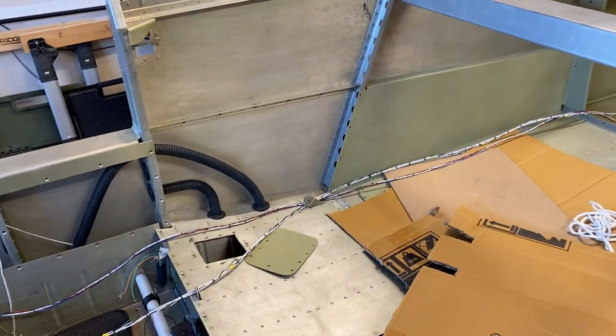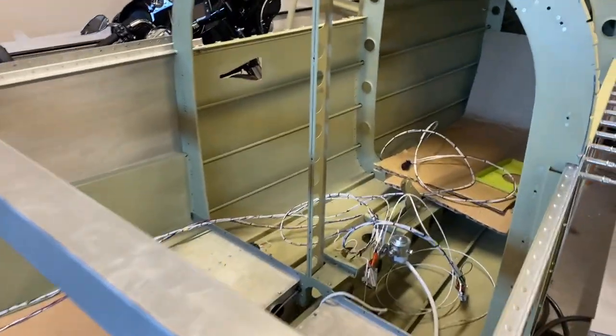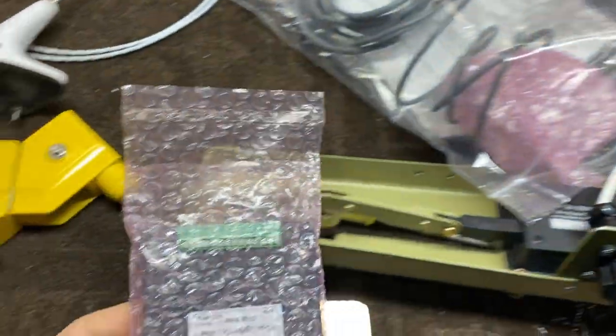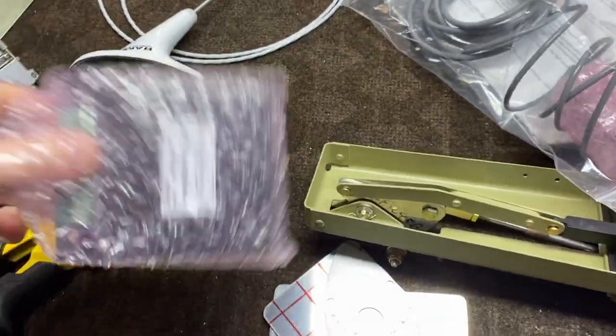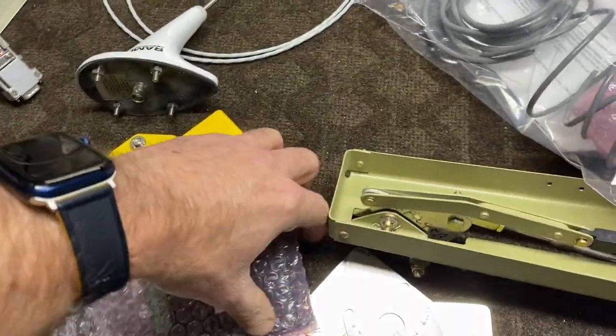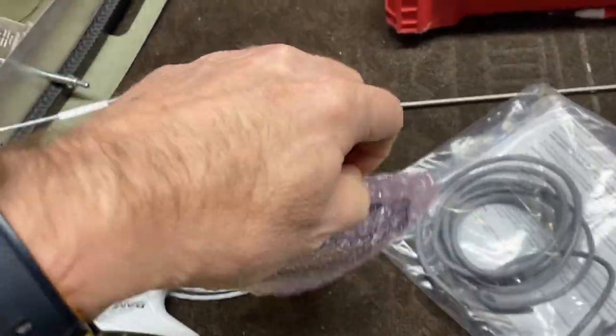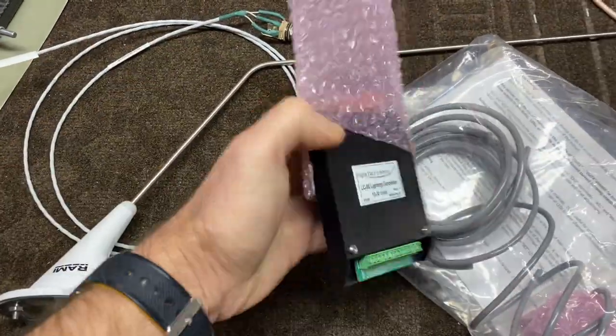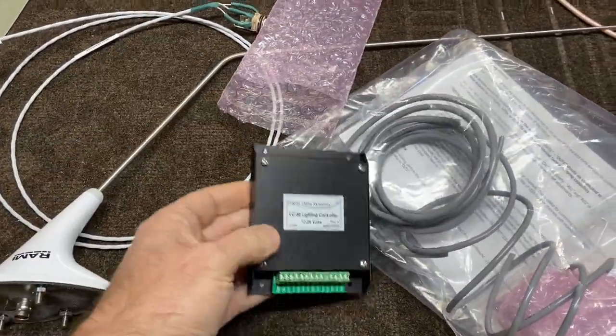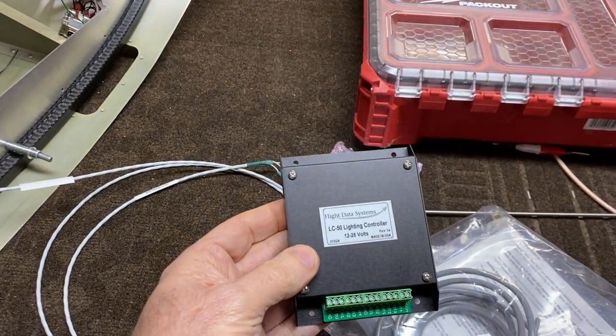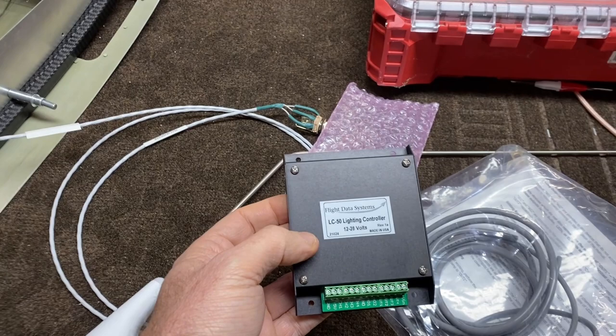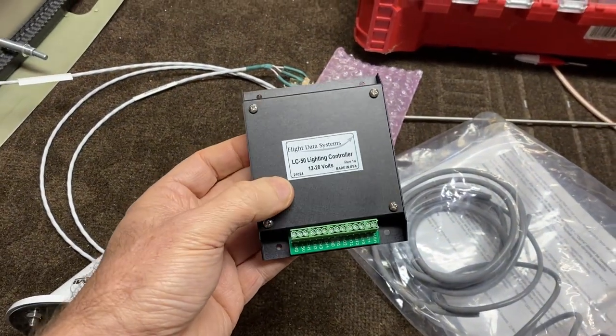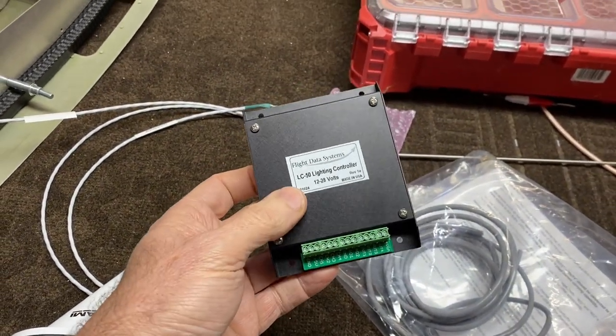Just thought I'd share that for a quick update. I ended up purchasing this from Aircraft Spruce. This is the LC50 lighting controller. There's a number of them out there, a number of ways you could have done this. Maybe I would have used the Garmin, but this was $160 or so.